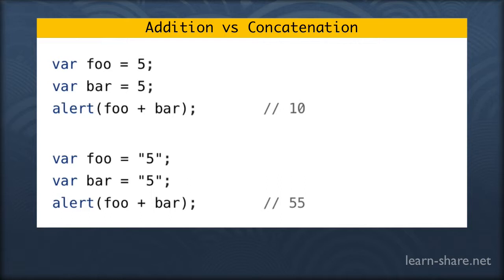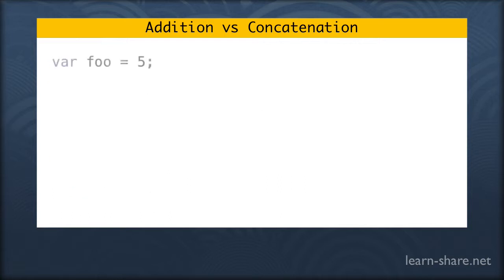Now what happens if you got one of each? So what happens if one variable is a number and the other is a string? If one is a string, that's going to take charge, and you get concatenation. And what happens if you try to do something that just doesn't make sense?